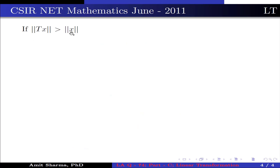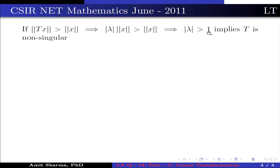If ||Tx|| > ||x||, this implies |λ|·||x|| > ||x||, which further implies |λ| > 1. This implies all the eigenvalues are nonzero, so T is non-singular. Therefore option 4 is false.